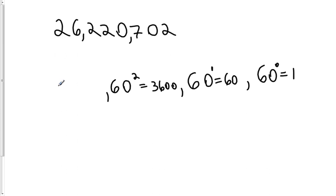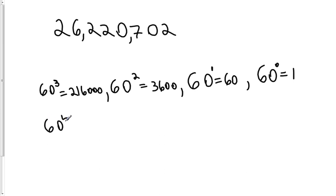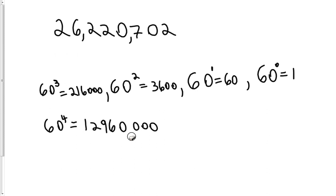The next place value would be the 60 to the third place — 60 to the third power is 216,000. The next place value would be the place for 60 to the fourth power, and 60 to the fourth power is 12,960,000. So that place value is the largest place value that is still smaller than this number. If we go 60 to the fifth power, it's going to be a number much larger than 26 million, because we're already up to 12 million here.